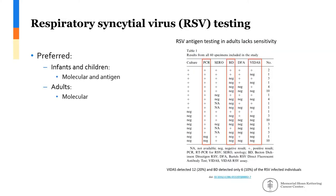For RSV testing, in infants and children molecular and antigen-based methods can both be used, but in adults molecular is preferred. A study assessing 60 specimens from potential RSV-infected adults evaluated the BD and Vitus antigen tests compared to PCR. The antigen tests were largely unable to detect RSV infection in these patients — overall only about 10 to 20% accurate detection of RSV-infected individuals, illustrating why molecular testing is preferred in adults.